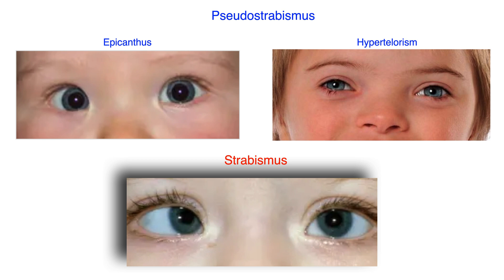This test also allows us to easily differentiate a pseudostrabismus from strabismus. In the photos above, we can see two cases of pseudostrabismus: epicanthus and hypertelorism. The epicanthus can simulate an esotropia and the hypertelorism an exotropia. We see the reflections correctly placed, though it may seem that the visual axis is deviated.